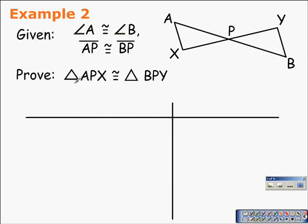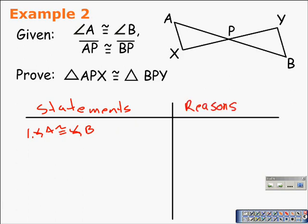Example two: we're given that angle A is congruent to angle B, and segment AP is congruent to segment BP. These are our statements, and these will be our reasons. That's our given.